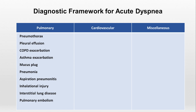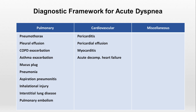Moving to the cardiovascular system, we have pericarditis, which is inflammation of the outer lining of the heart, a pericardial effusion, which is fluid within the pericardial space, myocarditis, which is inflammation of the heart muscle, and acute decompensated heart failure, which may be more of a syndrome than a true disease.